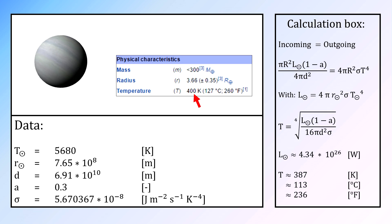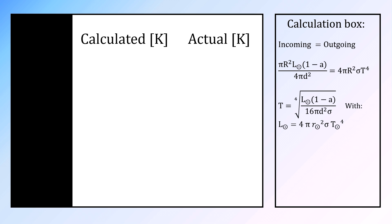But how good is such a prediction really? We can make a similar calculation and compare them with the actual data for the eight planets of our solar system: Mercury, Venus, Earth, and Mars, the terrestrial planets, and Jupiter, Saturn, Uranus, and Neptune, the gas giants.